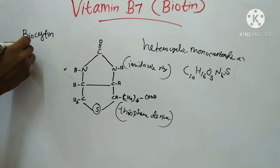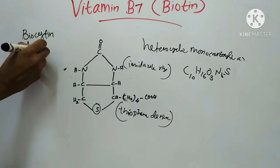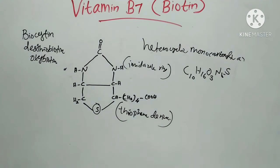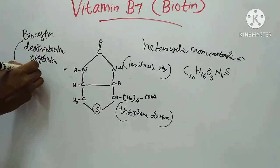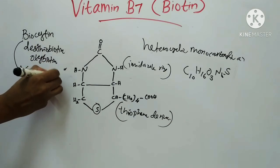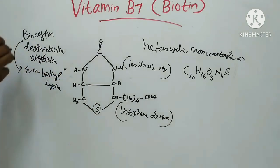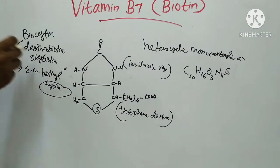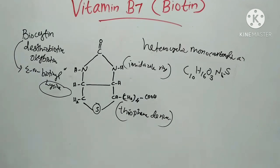Biocytin is epsilon-N-biotinyl-lysine, where biotin is bound with lysine residues of tissue proteins by amide bonds. Desthiobiotin and oxybiotin are biologically active in certain strains of yeast and bacteria. These are the bound forms of biotin.